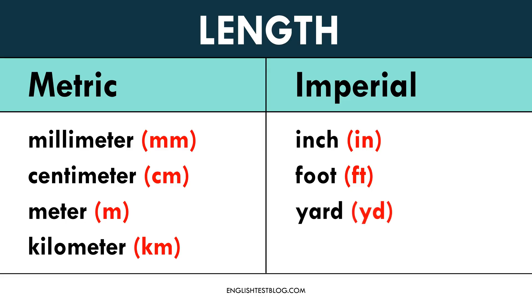The yard is used for slightly longer lengths, like fabric. One yard equals 3 feet or 36 inches. In metric terms, one yard is approximately 91.44 centimeters, which is just under a meter. The mile is used for long distances such as between cities, and is equal to 1,609 meters or 1,760 yards.